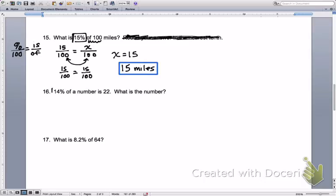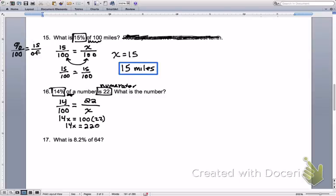The next one, we are given 14%, so we write 14 over 100. 14% of a number is 22. Is means numerator, so 22, and we're looking for that of. Let's go ahead and cross multiply. 14 times x equals 100 times 22, so 14x will equal 2200.